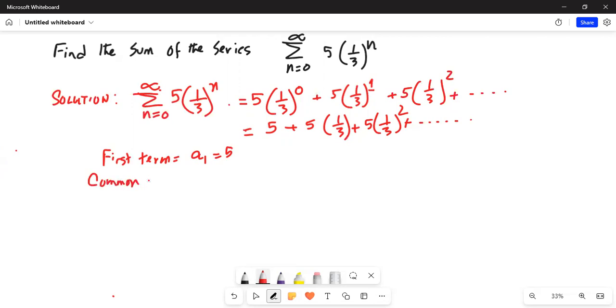which is the ratio of each successive term by the previous term. So, in this case, we can take the ratio of the second term divided by the first term.